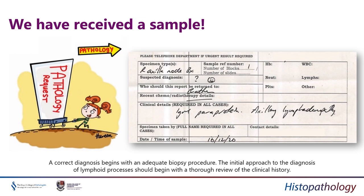Sometimes if the details say widespread lymphadenopathy and pancytopenia, that suggests a more high-grade or aggressive lymphoma. While if the clinical information notes an incidental finding during a GP examination or occupational health assessment, it's most likely — if it is malignant — something indolent. This applies to every pathology, whether reactive or neoplastic, malignant or benign. Always pay attention to details in the request form; the more detail, the better.